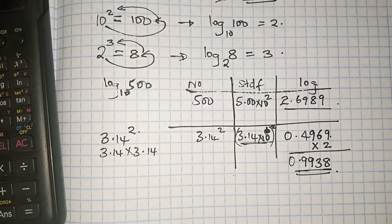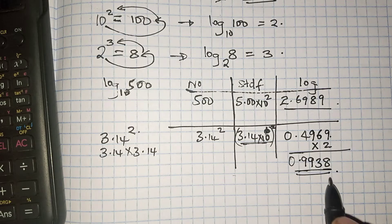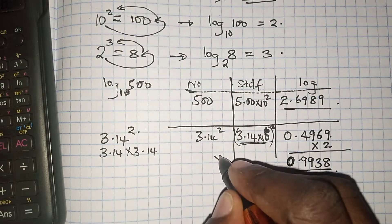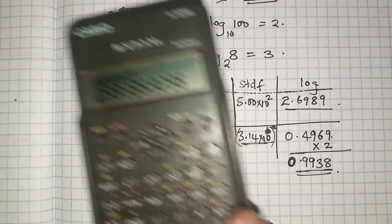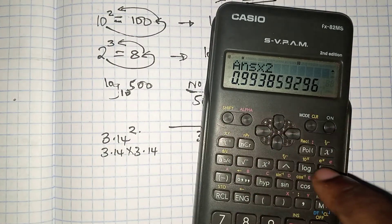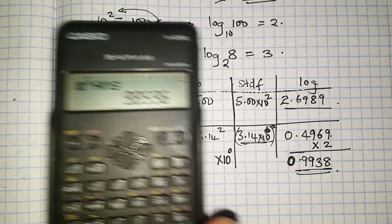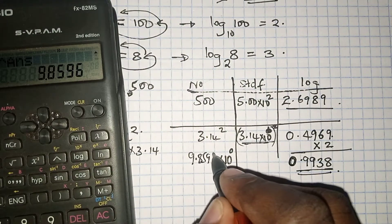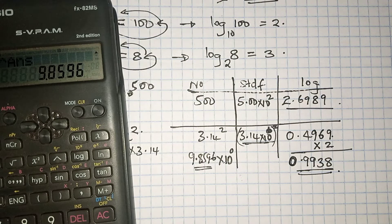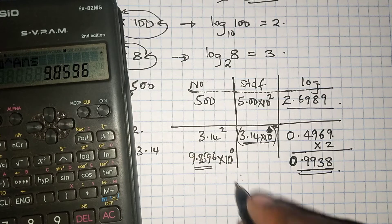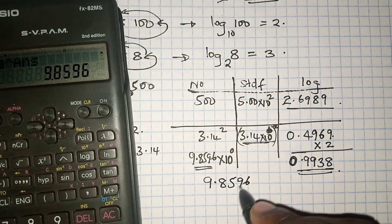That is not the end of the story — we need to find the antilog. The antilog of 0.9938: the characteristic is 0, meaning 10 raised to power 0. The antilog gives us 9.8596 times 10 raised to power 0, which is the same as 9.8596 times 1, and the final answer is 9.8596.